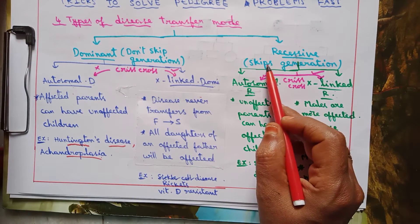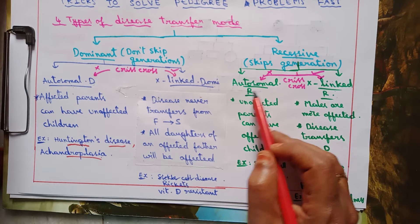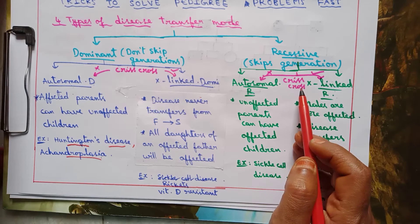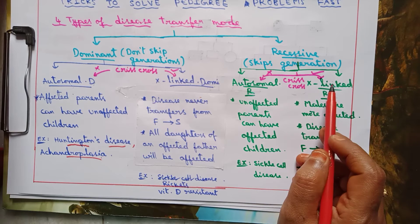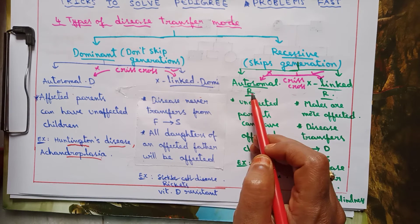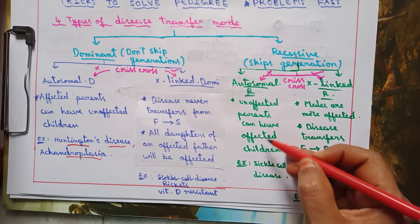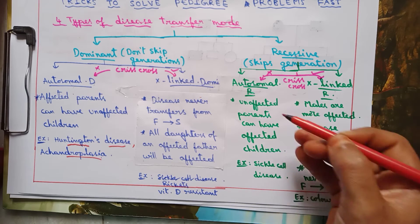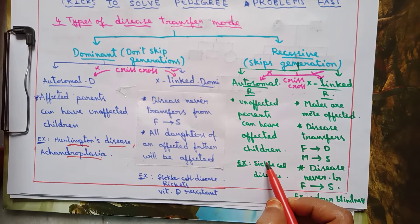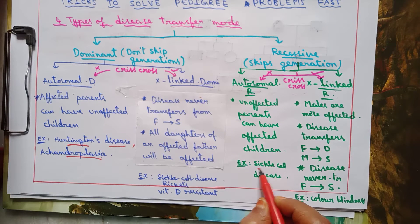In a recessive trait, if crisscross inheritance is absent, we conclude it is autosomal recessive. To confirm autosomal recessive, we use the trick: unaffected parents can have affected children. If this condition is seen in the pedigree chart, we can confirm it as autosomal recessive. An example of autosomal recessive disease is sickle cell disease.